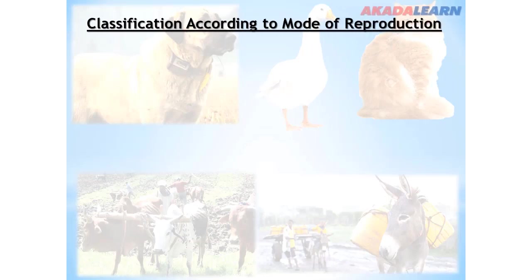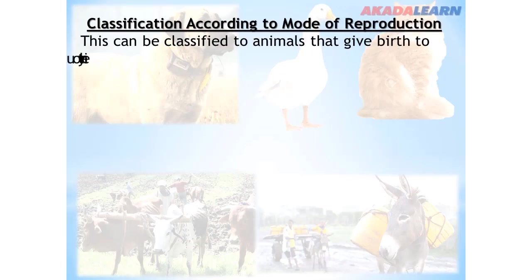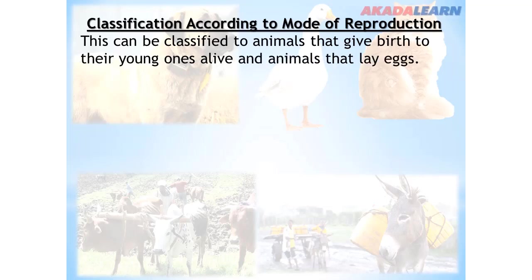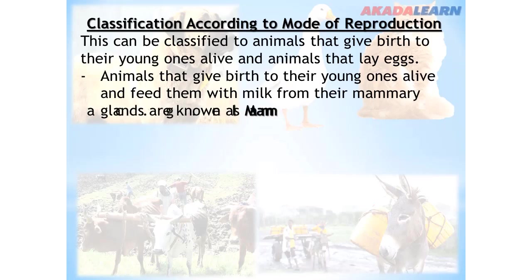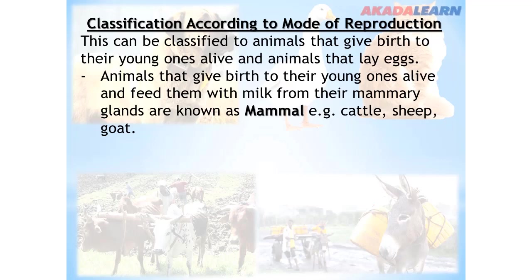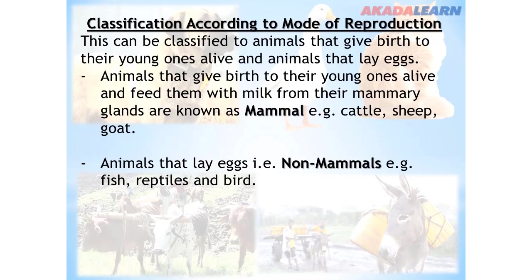Classification according to mode of reproduction: farm animals can be classified based on those that give birth to their young ones alive and those that reproduce by laying eggs. Animals that give birth to their young ones alive and feed them with milk from their mammary glands are known as mammals — for example, cattle, sheep, goats, and rabbits. Animals that lay eggs, i.e. non-mammals, include fish, reptiles, and birds.